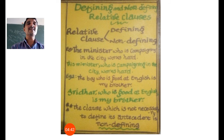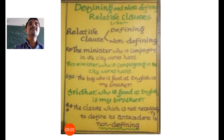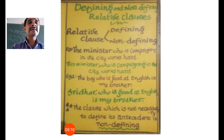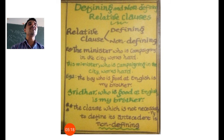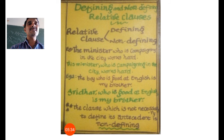Why? What makes the first sentence defining? In the first sentence, 'the minister' — we don't know which minister we are talking about. There are many ministers whose identity is not given here, so it is an unknown identity. When it is accompanied by 'who is campaigning in the city,' the relative clause helps us identify its antecedent, 'the minister.' An antecedent is the word placed before the relative clause. So the relative clause helps us identify its antecedent.